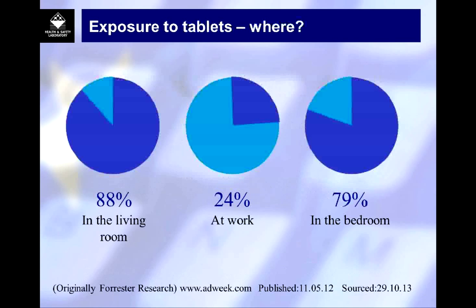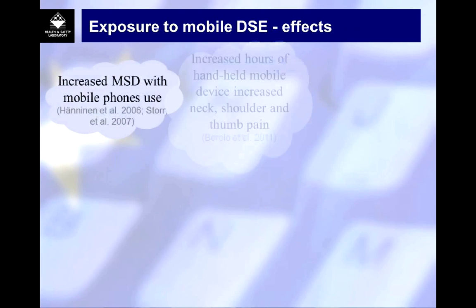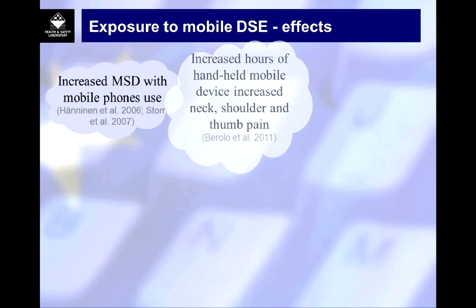Just to give an indication of some effects of exposure to mobile DSE — from research going back to 2006-2007, we do get increased musculoskeletal disorders with increased mobile phone use. We get increased hours of handheld mobile phone use linked with increased neck, shoulder and thumb pain, for example.